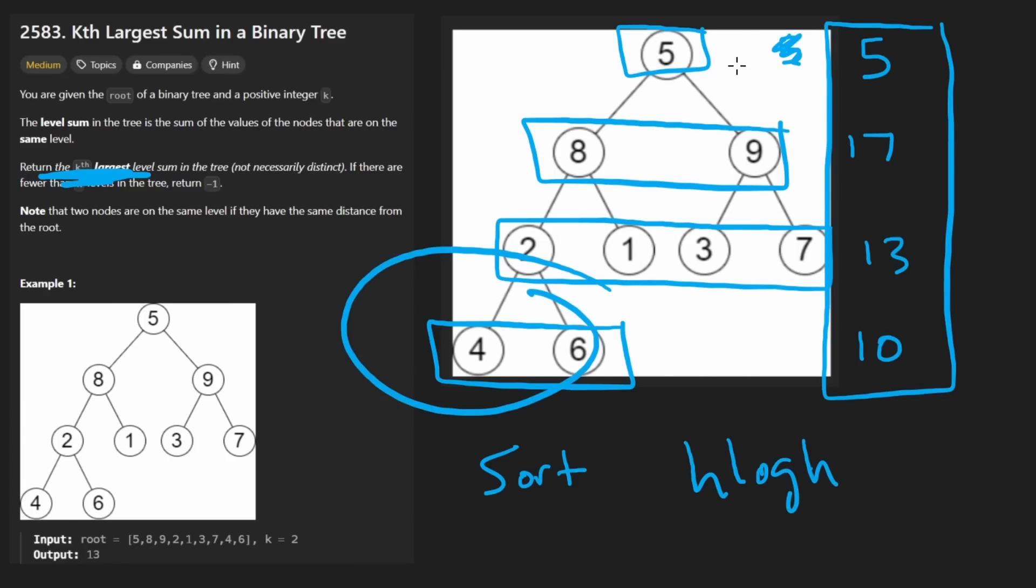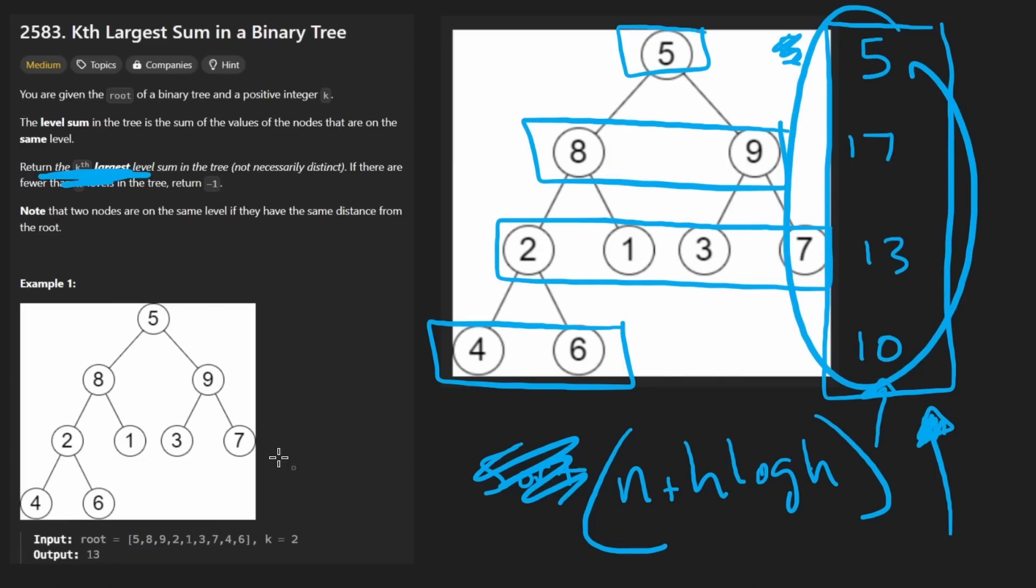The time complexity to sort that is going to be h log h. And of course, we're going to have to go through everything in the input. So the time complexity is going to be n, where n is the number of nodes, plus h log h. That's the overall time complexity. And once we have sorted input, we just return the length of this list minus k, because we want the kth largest.